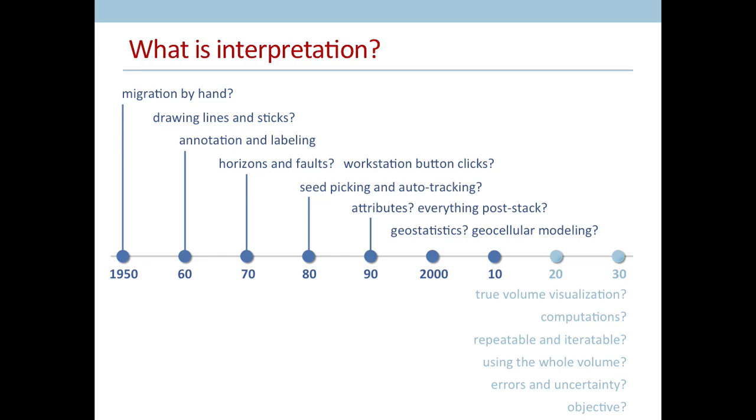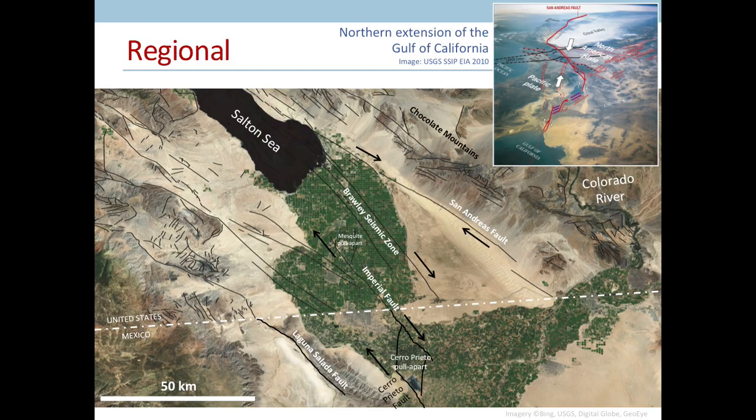In this talk, I demonstrate a thorough reservoir evaluation without picking a single horizon or fault. Maybe this is possible because I haven't picked any horizons or faults, and I think it's where more and more interpretation is heading. Depend less on static mapmaking and more on algorithms that allow the testing of multiple hypotheses.